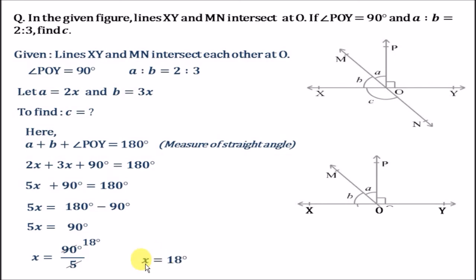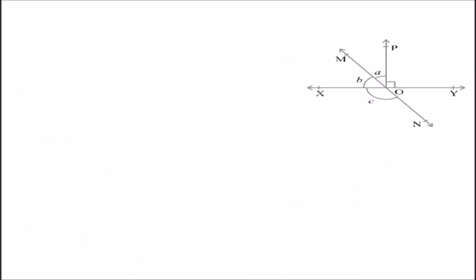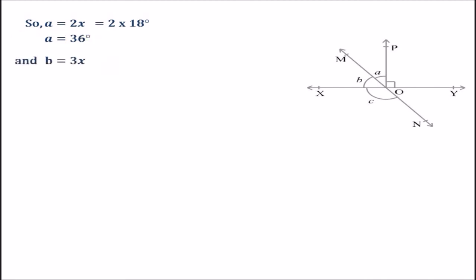Now we will put the value of x into a and b to get their actual magnitudes. Since a equals 2x, 2 into 18 degrees gives us a equals 36 degrees. And b equals 3x, so 3 into 18 gives us b equals 54 degrees. So we have found the values of a and b.